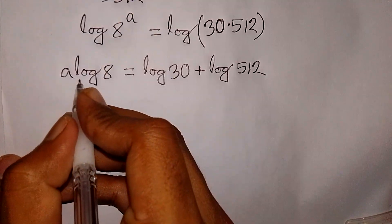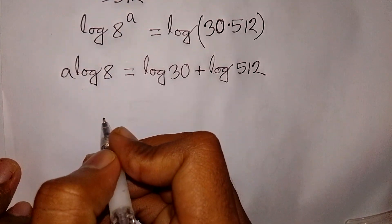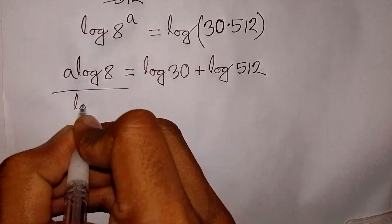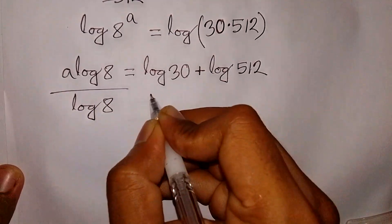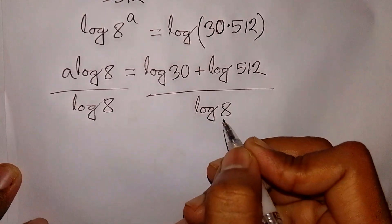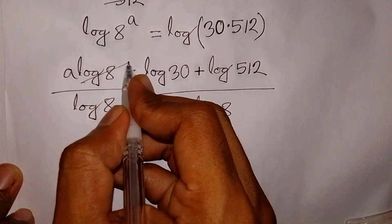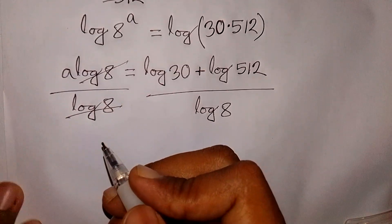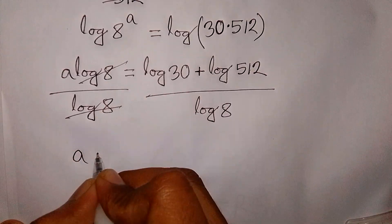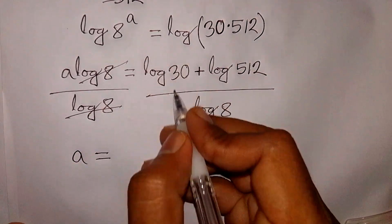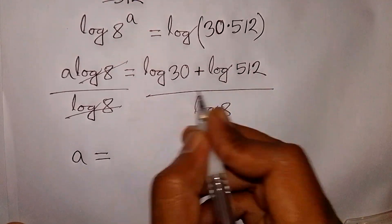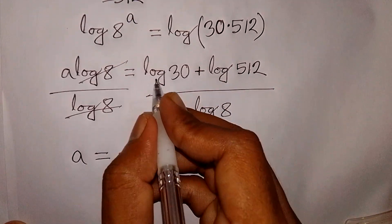Now we divide both sides by log 8, because we need the value of a. So divide by log 8 on both sides. We see this log 8 and this log 8 will be cancelled. Here a will be equal to (log 30 + log 512) over log 8.